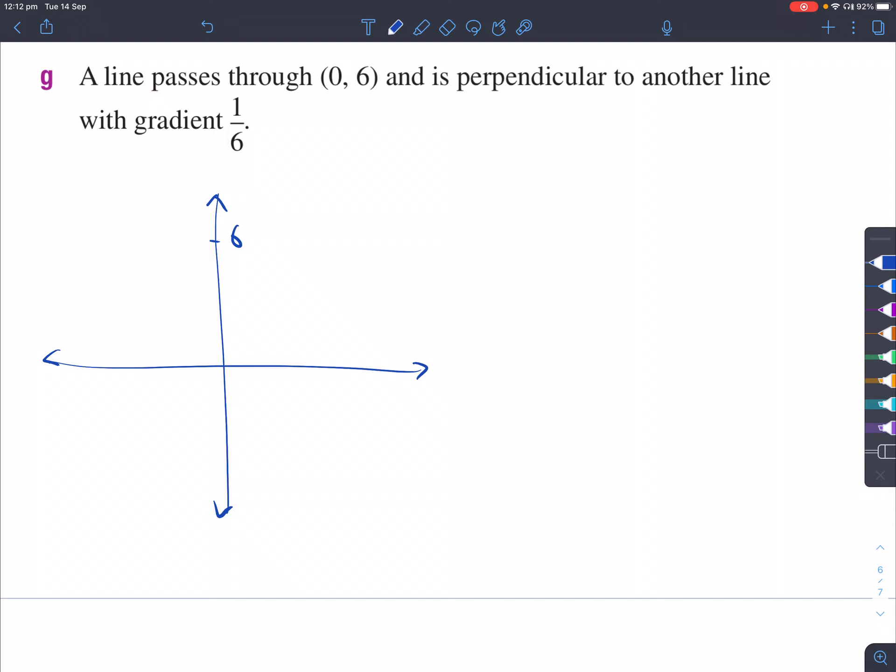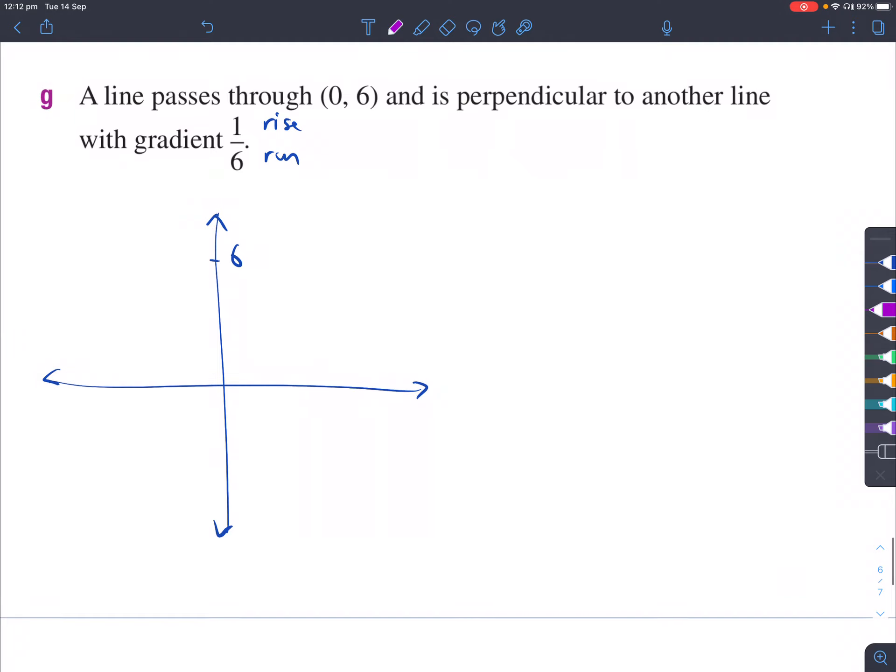So if I was to do this really accurately, 1 over 6 just means the rise is 1 and the run is 6. So if you imagine running by 6 and rising up by 1 and draw another point there, I can join up at that point. It's not a very steep line. It's very, it's slightly horizontal. It's flat. It's almost flat. So you've got a line like this. That's the gradient of 1 over 6.